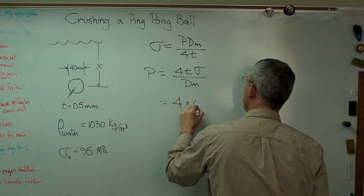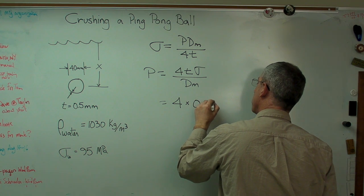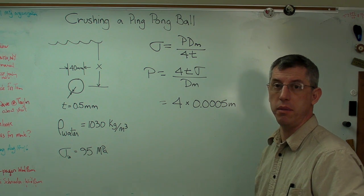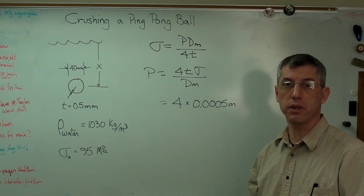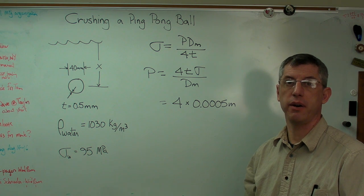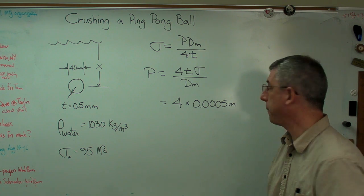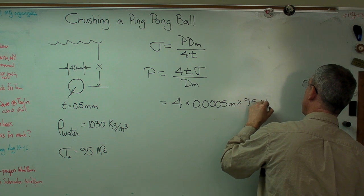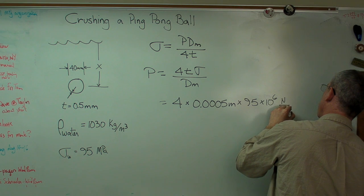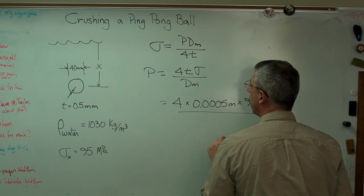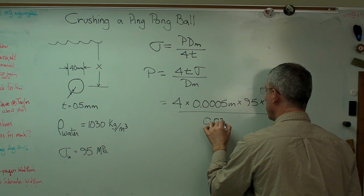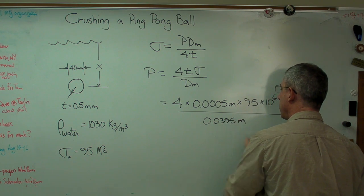So let's start putting some numbers in here. I've got 4 is just a number. My wall thickness is 0.0005 meters. Now I'm going to work in meters. I'm going to work in the most basic units possible. I find out I mess up less often when I do it that way. Times 95 times 10 to the sixth newtons per meter squared, all over my mean diameter, 39.5 millimeters. So it's 0.0395 meters.